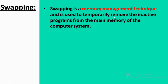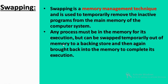Inactive programs are temporarily moved to secondary memory, so that process or program execution is not allowed while swapped out. Any process must be in the main memory for its execution. So that program or process can execute, but it can be swapped temporarily out of the memory to a backing store, and then again brought back into the memory to complete its execution. The backing store is nothing but a hard disk or secondary memory. This process from secondary memory back to main memory we call swap in.